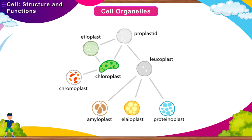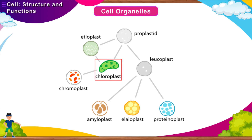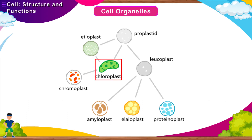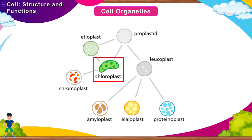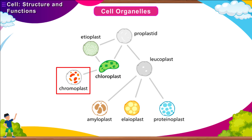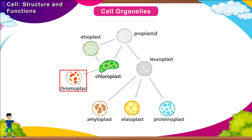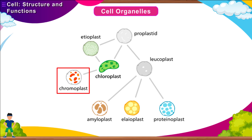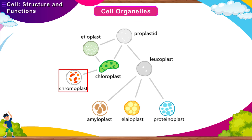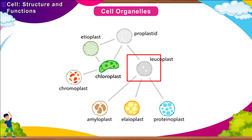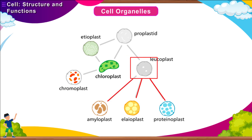Plastids occur only in plant cells and are of three types. Chloroplasts contain chlorophyll that gives them their green color and help in photosynthesis. Chromoplasts are colored plastids typically containing a yellow or orange pigment, and they provide color to flowers and fruits. Leukoplasts are colorless and help in storage of food, for example in potato tubers.